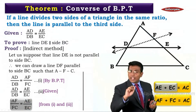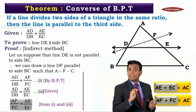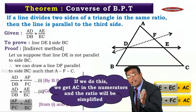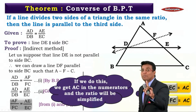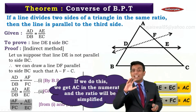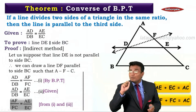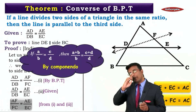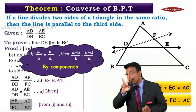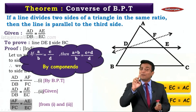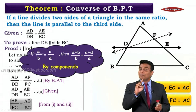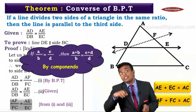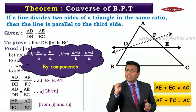We are talking about AE + EC and AF + FC — in both cases we get AC in the numerator of both ratios, and the ratio will be simplified if we can get this. Remember what we learned earlier: if a upon b is equal to c upon d, then a plus b upon b is equal to c plus d upon d, which is nothing but componendo. This can be applied when two ratios are equal.